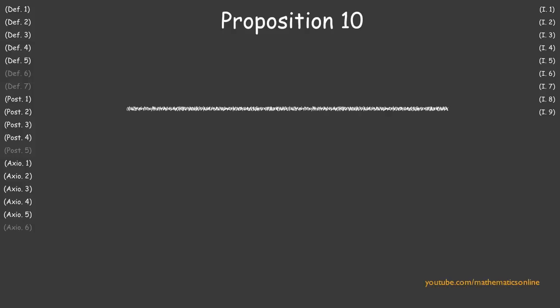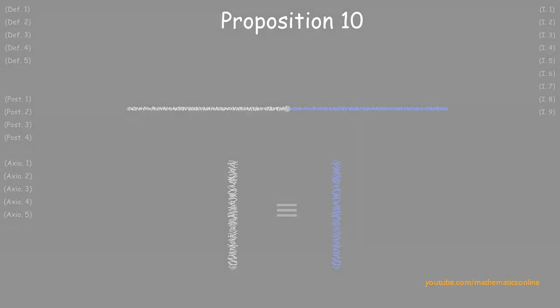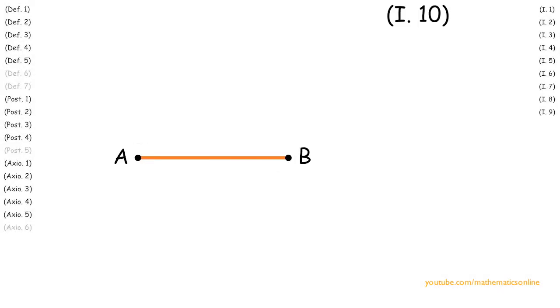In Proposition 10, we prove that with any line we can always bisect it into two congruent lines. To begin this proposition, we are given an arbitrary line AB.